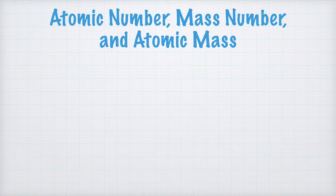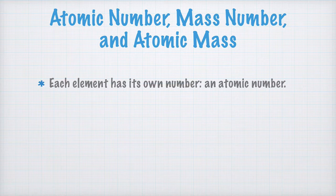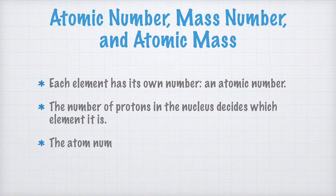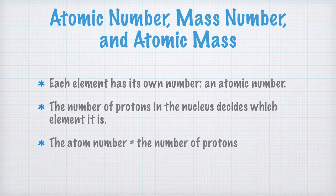Every element has its own number, an atomic number. Which element a certain atom is, is decided by one thing only: the number of protons in its nucleus. The atomic number is equal to the number of protons in the nucleus.